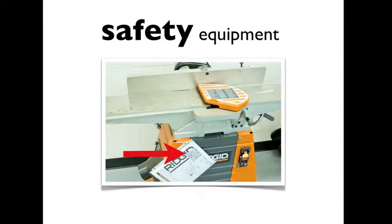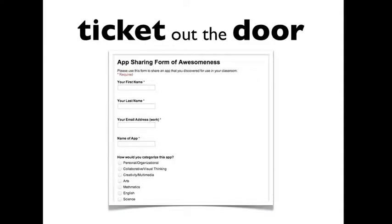If you are in a tech ed or science classroom, you might have safety videos that are important for specific equipment — a QR code placed right on the tool can show off some safety instructions. Another great way to use QR codes is as a ticket out the door. You can create a survey in Google Docs, make a QR code out of its address, and as students are getting ready to leave the classroom they just scan it and answer some quick questions — it's a great way to get important information from the kids.